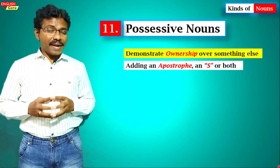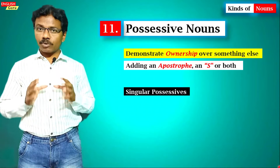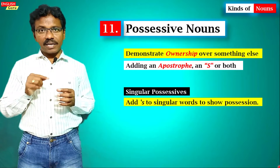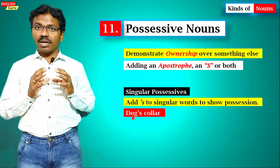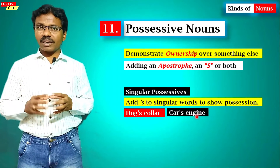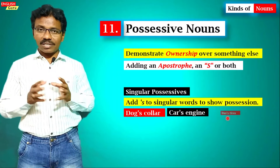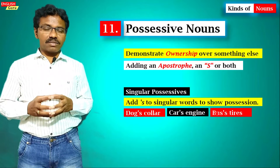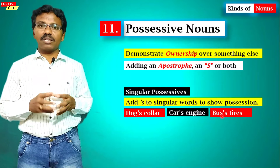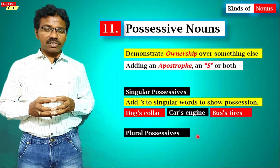Singular possessive nouns are formed by adding apostrophe + 's' to a singular noun. For example, 'dog's collar' means the collar of a dog. 'Car's engine' means the engine of that particular car. 'Bus's tire' means the tire belongs to that particular bus.